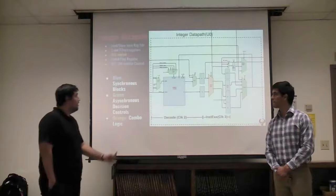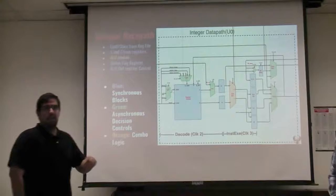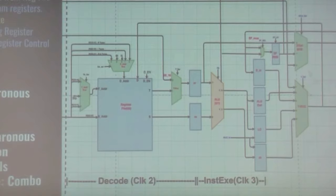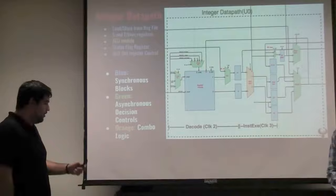First we'll be talking about the integer data path. The integer data path has a register file with 32 registers, all of them 32 bits in length. The key ones you need to know are: register zero, which is hardwired to 32-bit zero; register 29, which is your stack pointer; and register 31, which is your RA register.